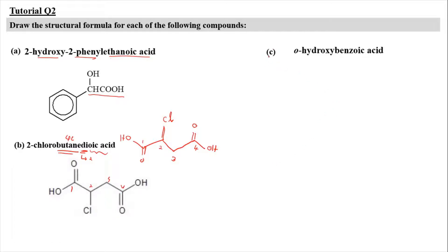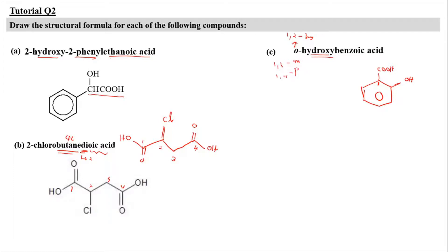For the next structure, which is ortho-hydroxybenzoic acid: 'ortho' means the 1,2 position. So it's basically a benzene ring with a carboxyl group — that's benzoic acid. The carboxyl carbon is numbered 1, and at carbon number 2 there is an OH group, which refers to the hydroxy. Meta is 1,3 and para is 1,4. So if they ask for meta, OH should be at position 3; if para, OH should be at position 4. You can draw it in different orientations as long as the numbering is correct.